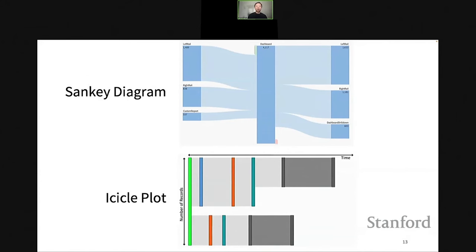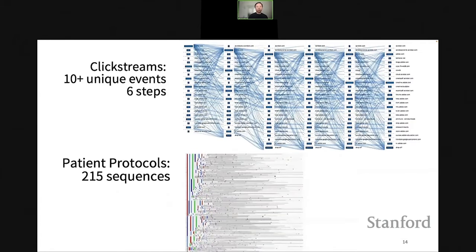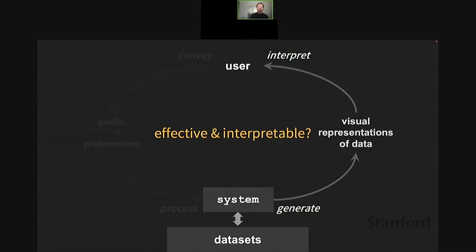There are visualizations available for these kinds of datasets. Here we're looking at two examples — the Sankey diagram on top and the icicle plot at the bottom. Commercial tools like Google Analytics or Adobe Analytics use these visualizations to show event sequence data. The problem is that these visualizations are not very scalable. Applying the Sankey diagram to only a moderately sized dataset of clickstreams with a dozen unique events and six steps makes it really hard to understand. Similarly, looking at only 200 patient record sequences makes the icicle plot really unintelligible.